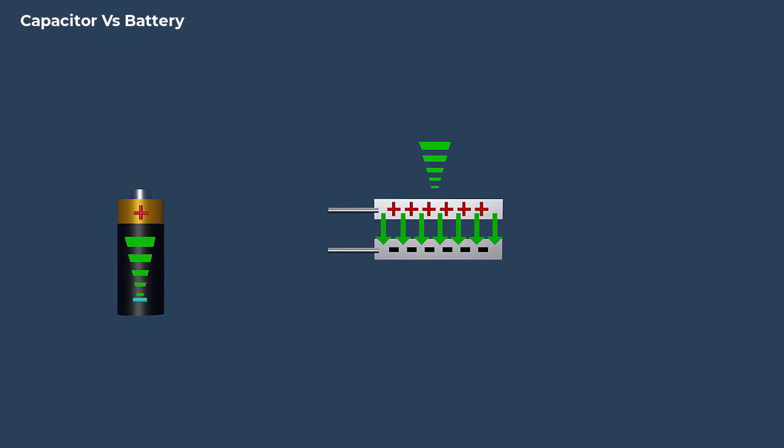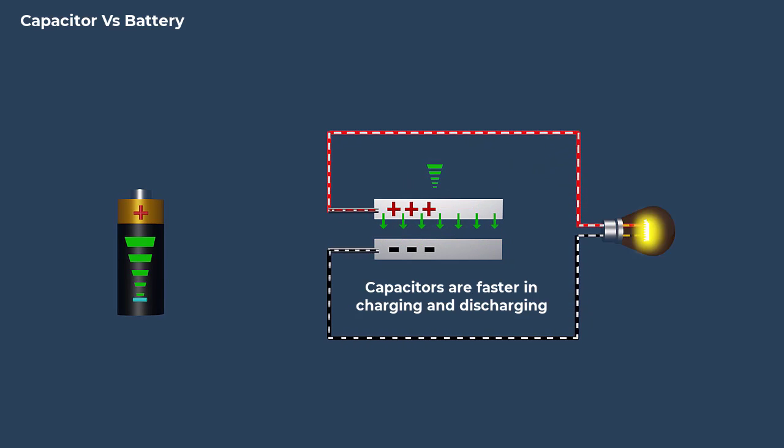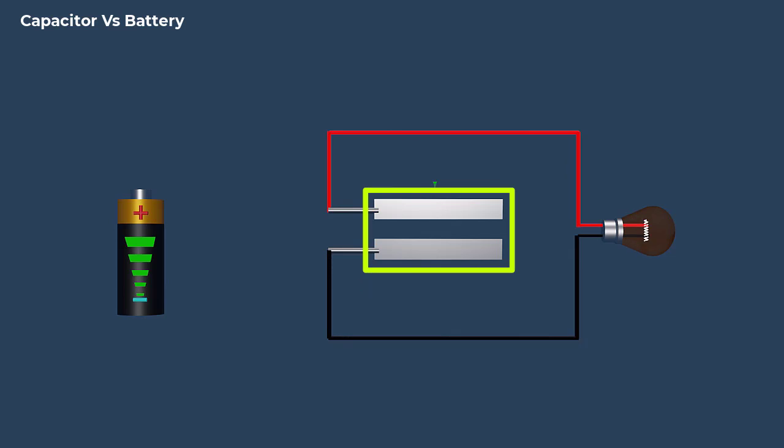This means that capacitors can store and release their energy much faster than batteries, but they cannot store as much energy as a battery does.